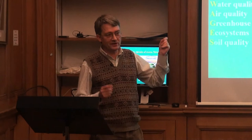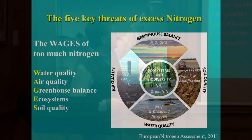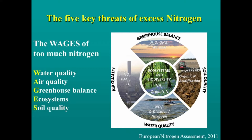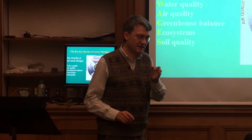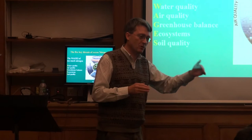The five reasons to care about nitrogen — the 'wages' of too much nitrogen — are water, air quality, greenhouse gas balance, ecosystems, and soils. Apart from feeding us, nitrogen going into the environment causes all these impacts. The diagram has some esoteric lines too, referencing ancient Greek philosophy — fire, water, air, earth, and the quintessence in the middle — because there's always another secret behind the one you've been told.